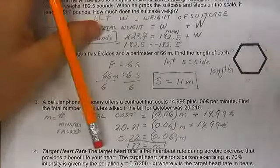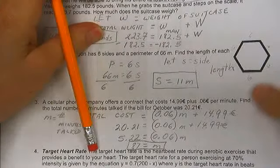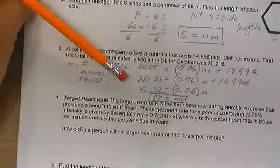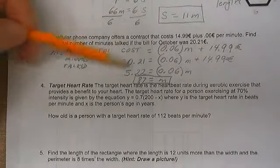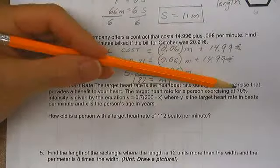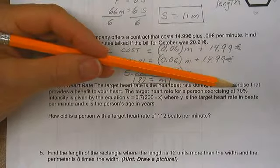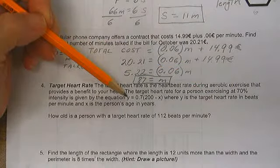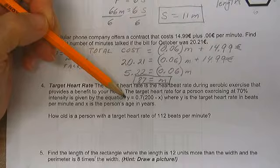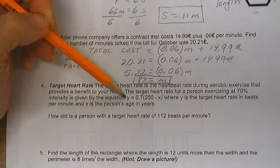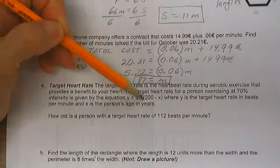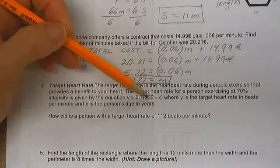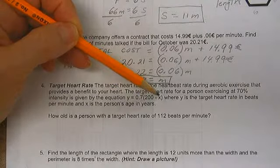Target heart rate. Target heart rate is the heartbeat during aerobic exercise that is good for your heart. If you exercise at 70% intensity, y is the target heart rate, and that's equal to 0.7 times the quantity 200 minus x.